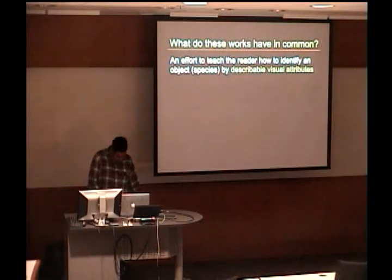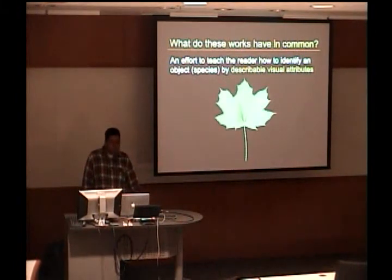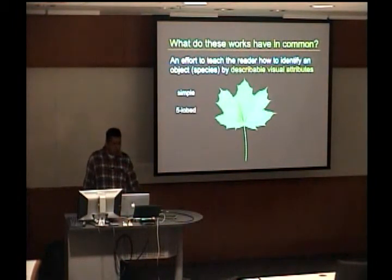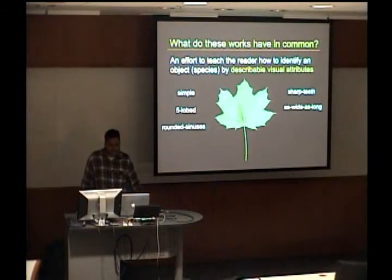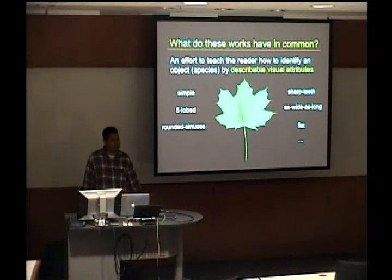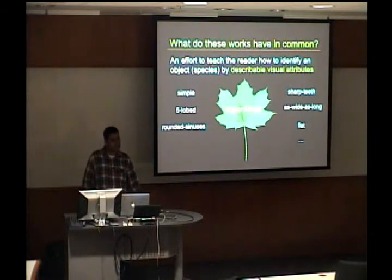What do I mean by describable visual attributes? Say you have this leaf and you have to describe to someone what this is. You might say it's a simple leaf as opposed to compound. It has five lobes. It has rounded sinuses. It has sharp teeth. It's as wide as it is long. It's flat, and so on. Using all of these terms, you could then say this must be a sugar maple, because it has all of these attributes.